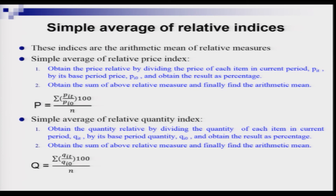Similarly, we can construct the simple average of relative quantity index. We follow the same two steps: first, obtain the quantity relative by dividing the quantity of each item in the current period (Q_it) by its base period quantity (Q_i0) and multiply by 100; then obtain the sum of the above relative measures for all commodities and divide by the number of commodities to get the arithmetic mean.